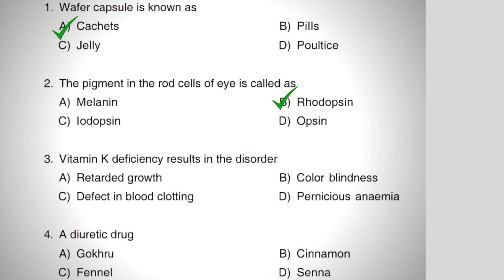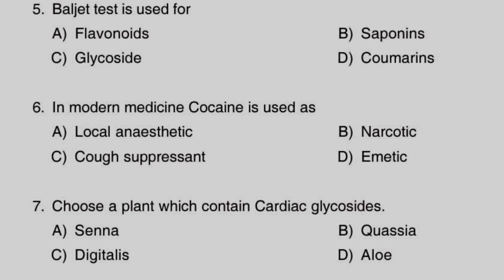Next question: a diuretic drug — Option A: gokhru, Option B: cinnamon, Option C: fennel, Option D: senna. The right answer is Option A, gokhru. Among these four options, gokhru is a diuretic drug. Both cinnamon and fennel are carminatives, and senna is a laxative.